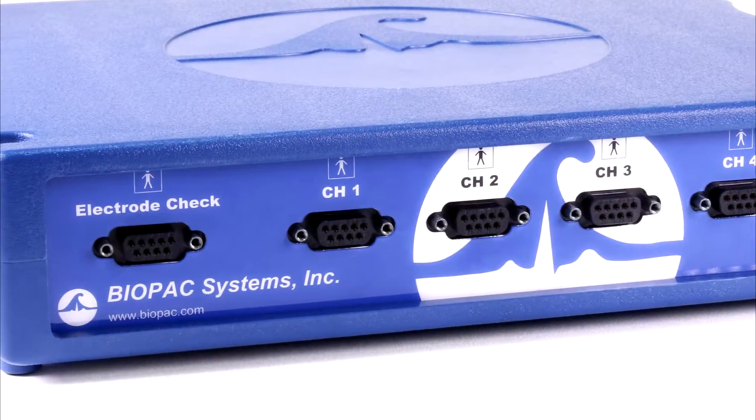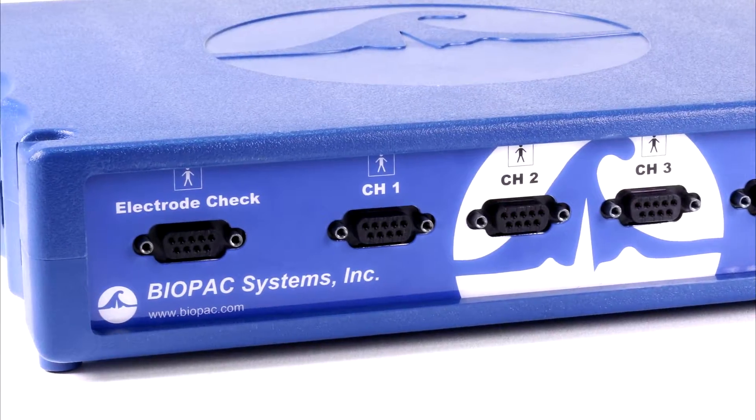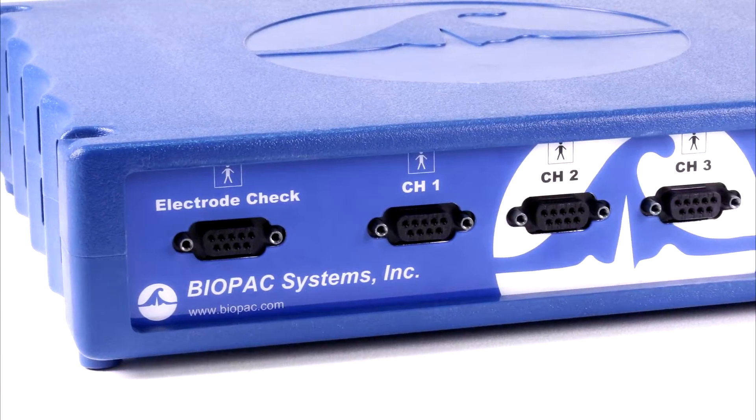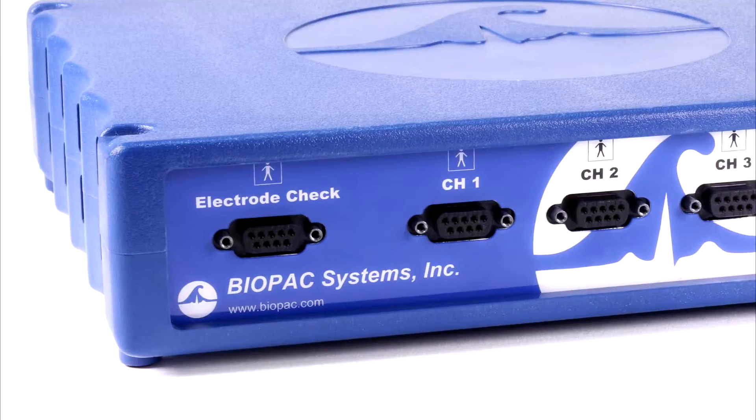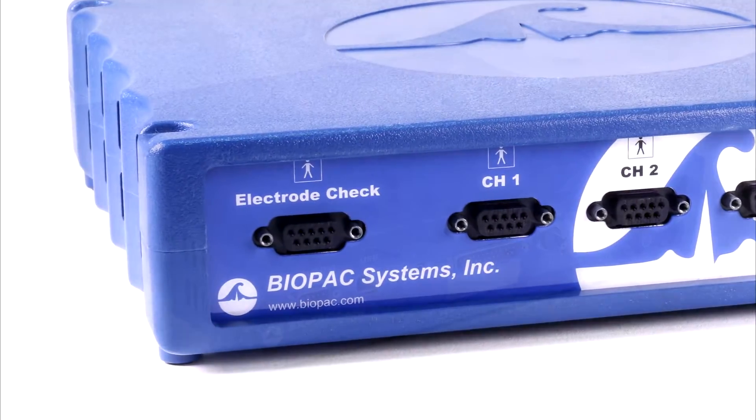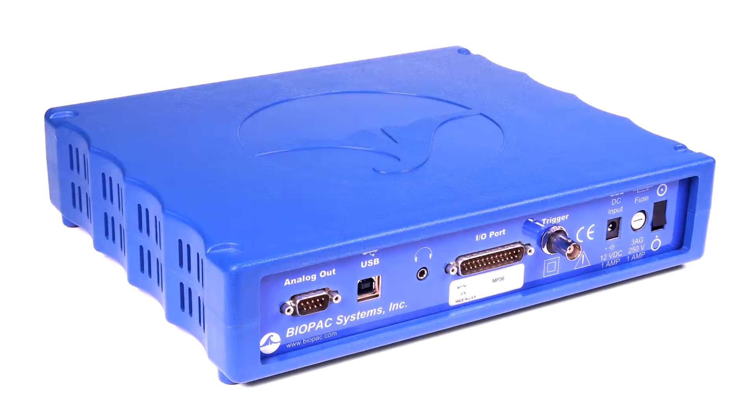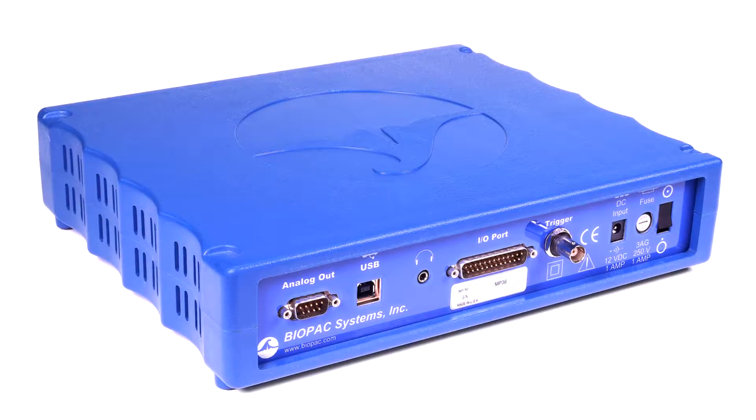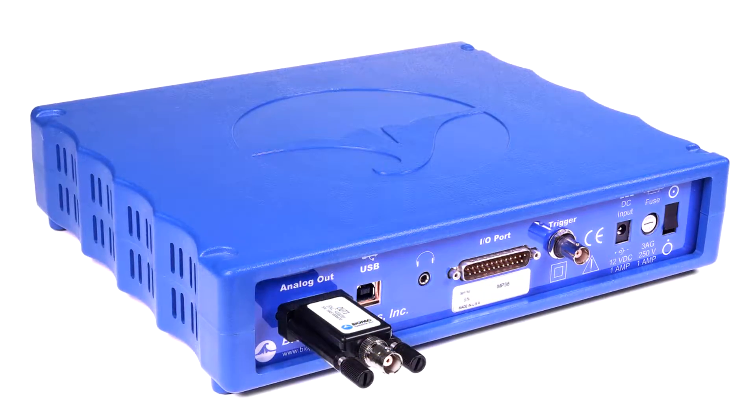transducers, I.O. devices, and stimulation. The electrode checker confirms signal quality before recording begins to help students collect good data. The MP36 also has a built-in low voltage stimulator for animal studies accessible by adding the OUT3 stimulator output adapter.